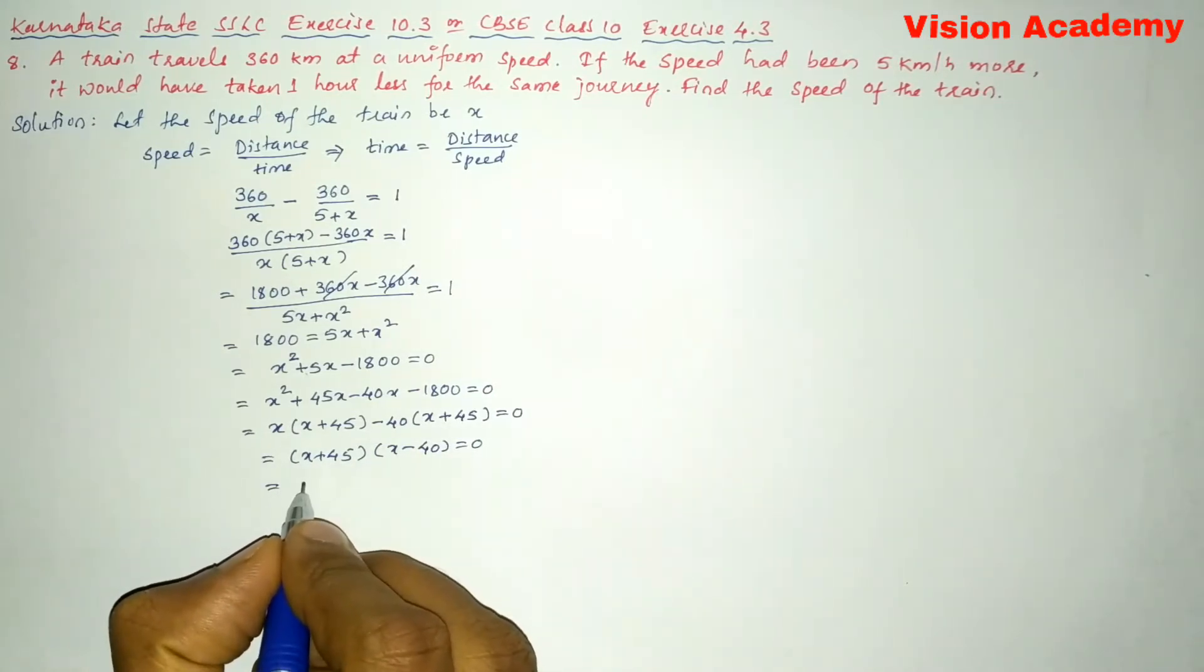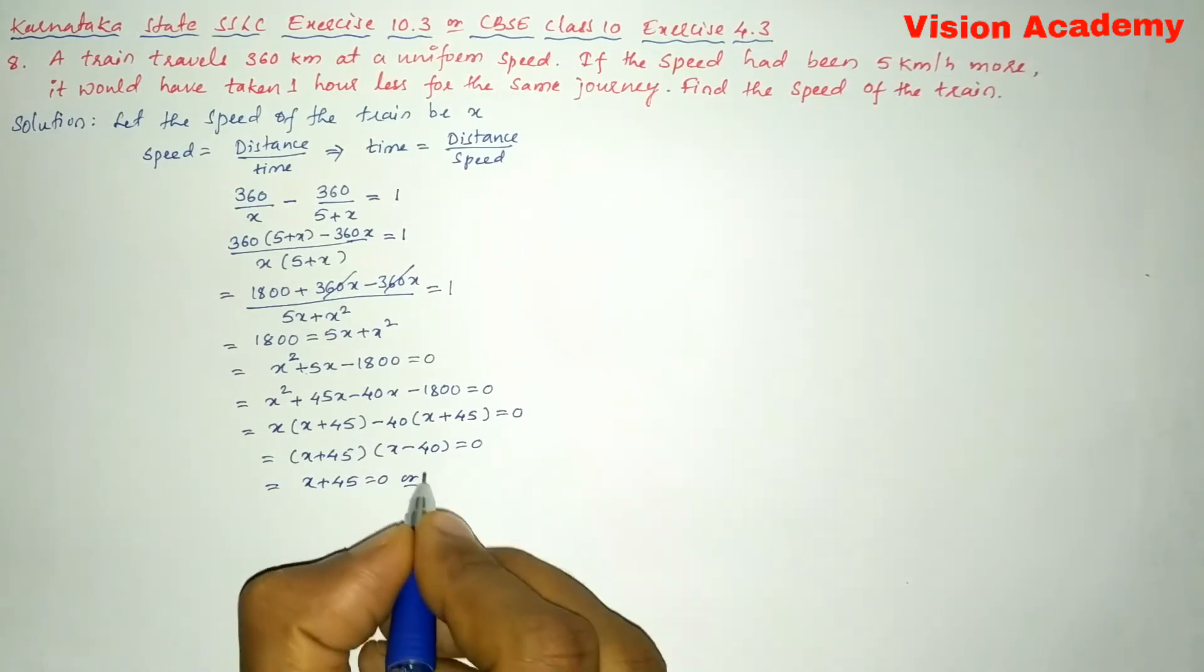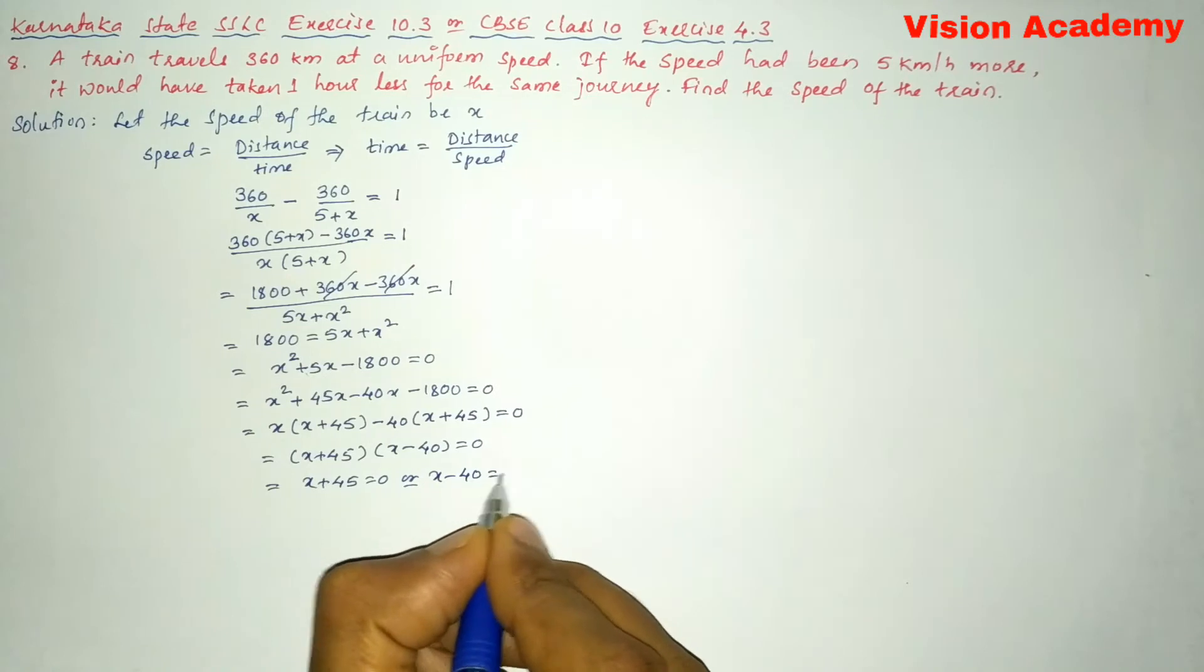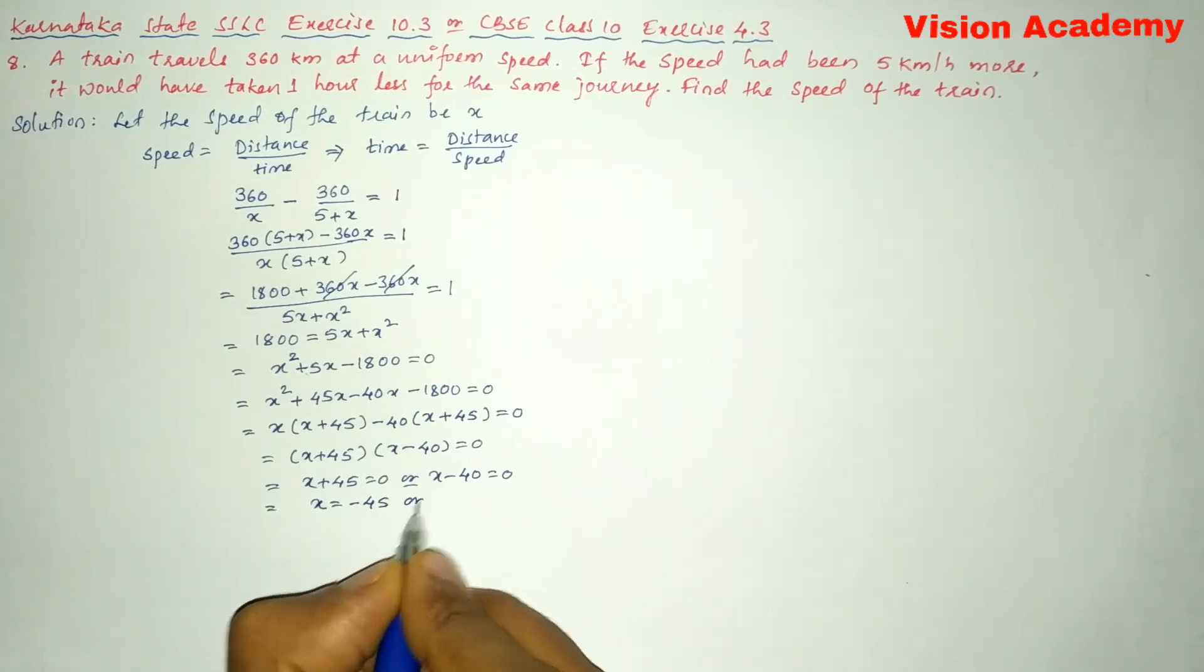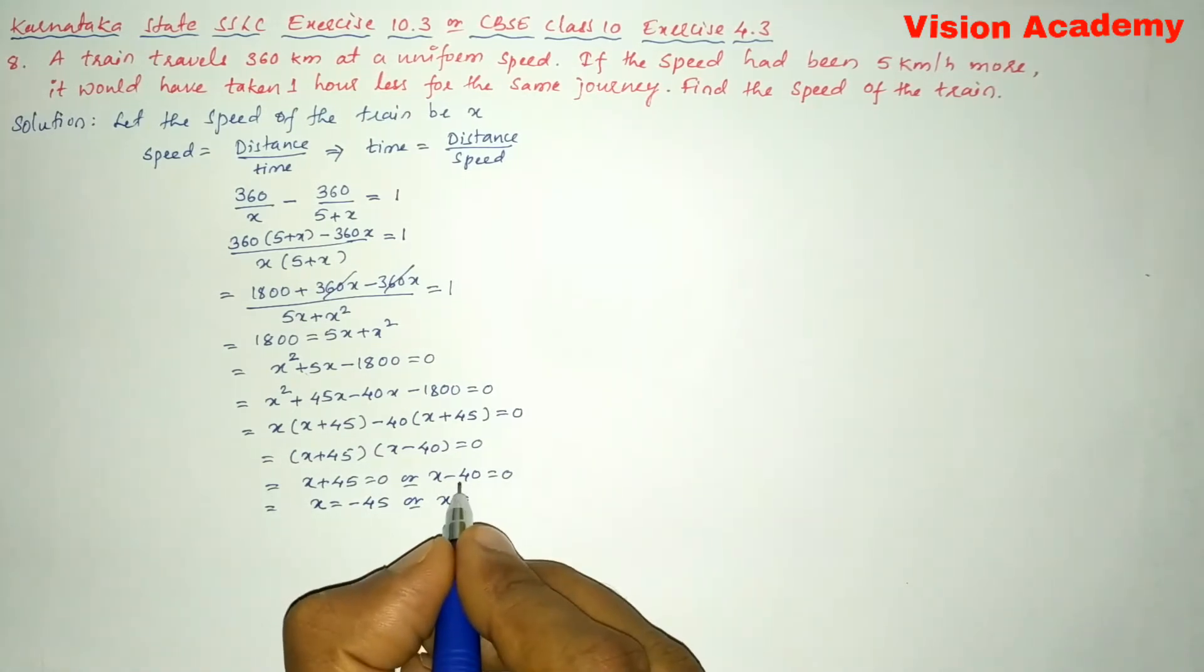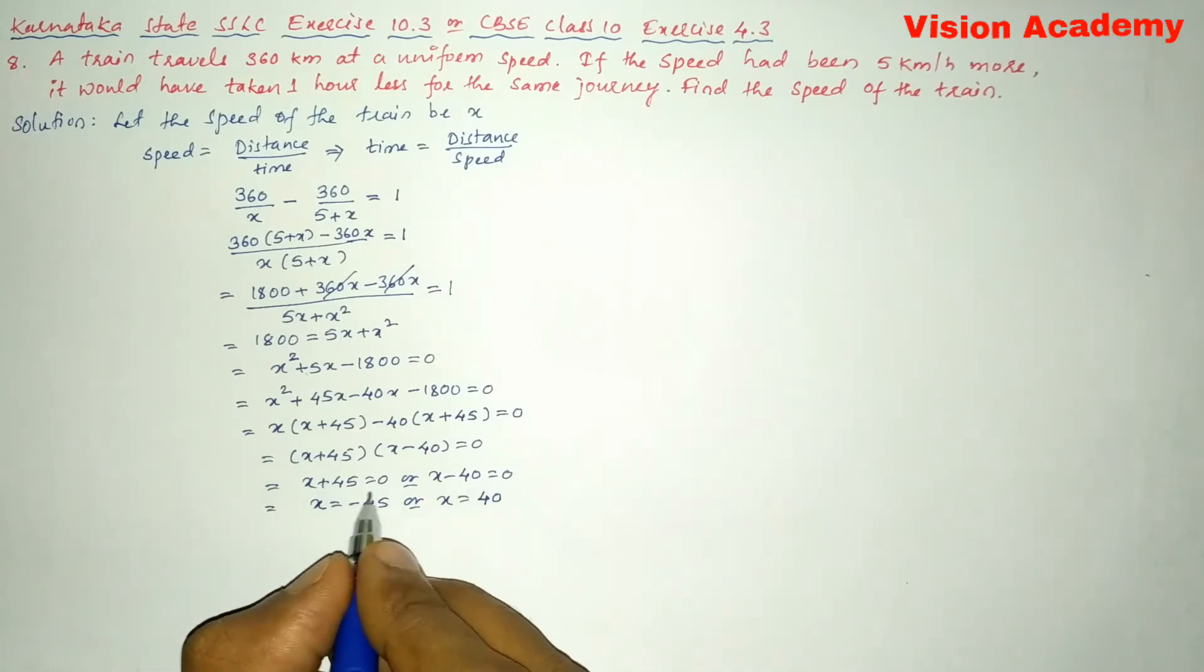So now this one can also be written as x plus 45 is equal to 0 or x minus 40 is equal to 0. Now let us transform this plus 45 from LHS to RHS, now it will become minus 45, or x is equal to, if we transform from LHS to RHS it will become plus 40. We are not going to consider the negative value as the speed can't be negative.